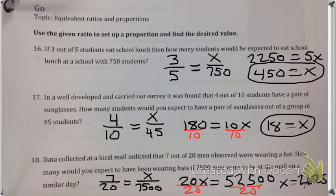So that's reasonable, right? 7 out of 20 is a little bit more than 30%, one-third. So we'd expect a little bit more than one-third to be wearing hats. It's reasonable. And is that all of our problems? It is.